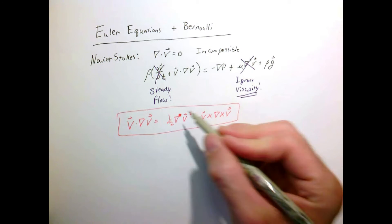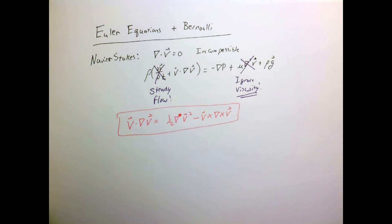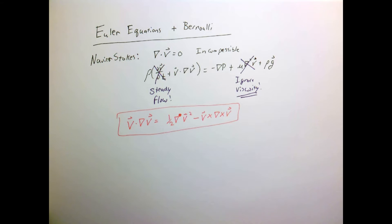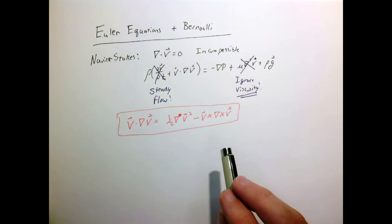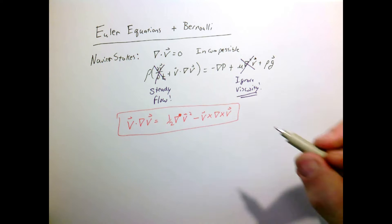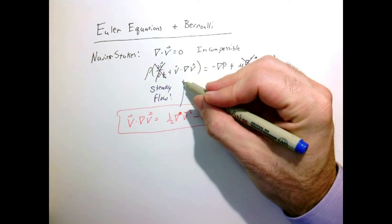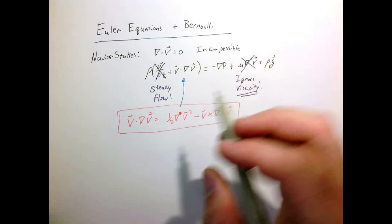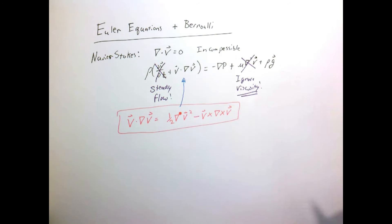Note that there's no del-squared there — it's just the gradient of the velocity squared. One can prove this identity by carrying things out in component form, or simply look it up. Now I'm going to substitute this expression into our equation for v dot gradient v.